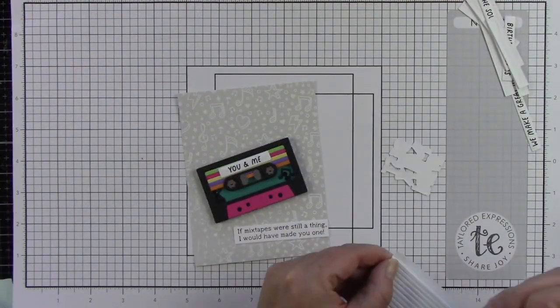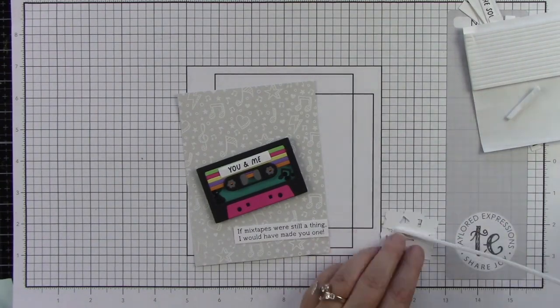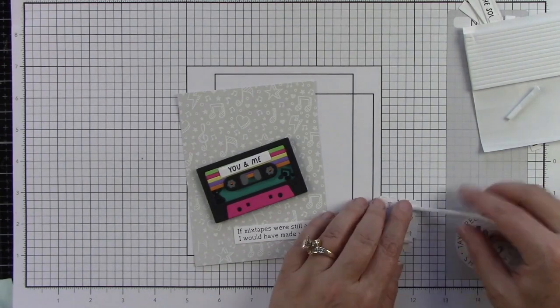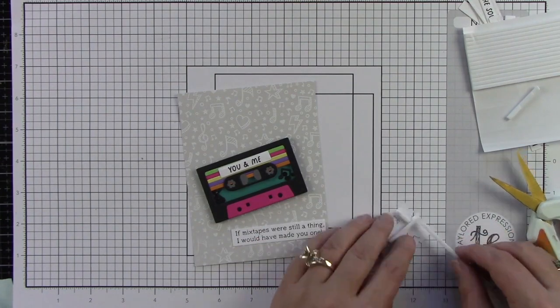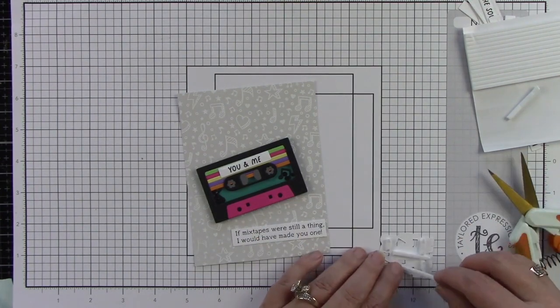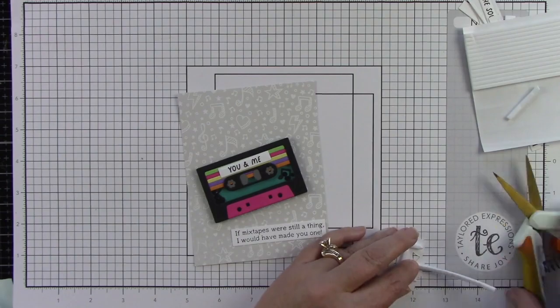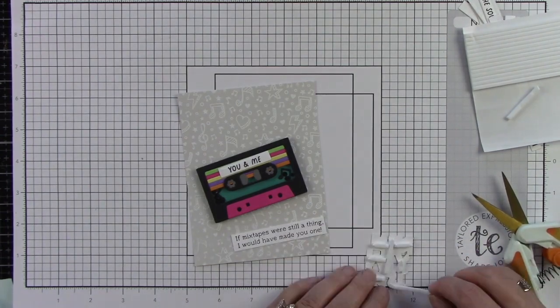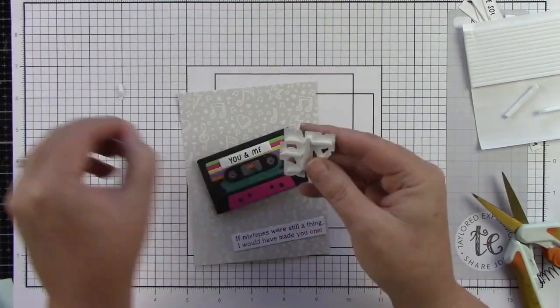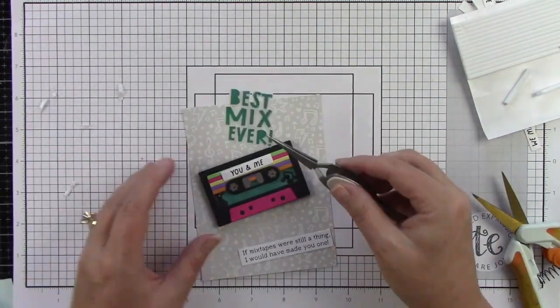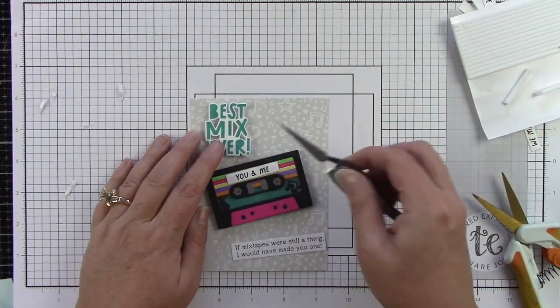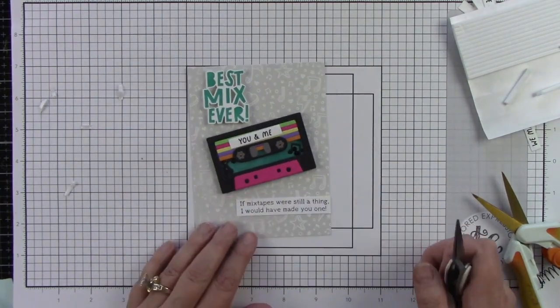Now let's lay this out. I am using some foam sticky strips behind the Best Mix Ever sentiment. I want all my sentiments popped up and that tape is really thick because remember we added all of those layers of cardstock. It's almost about the size of a normal cassette tape - it's so thick but everything is going to have dimension which feels like a whole lot of fun.